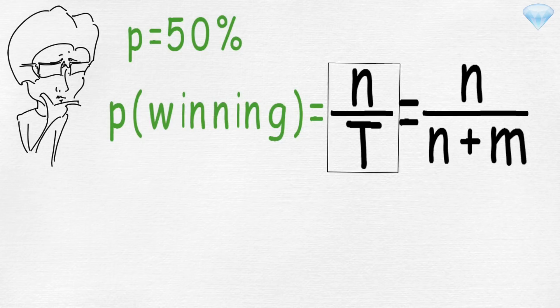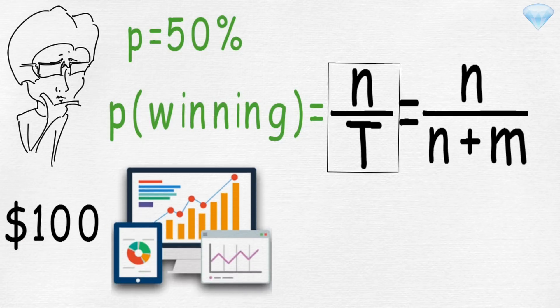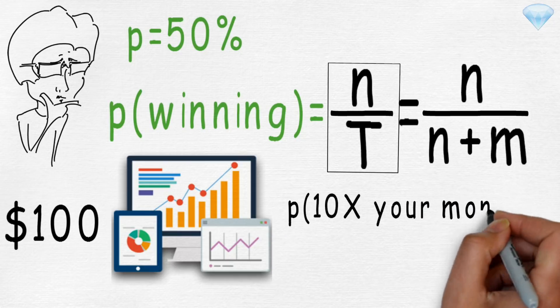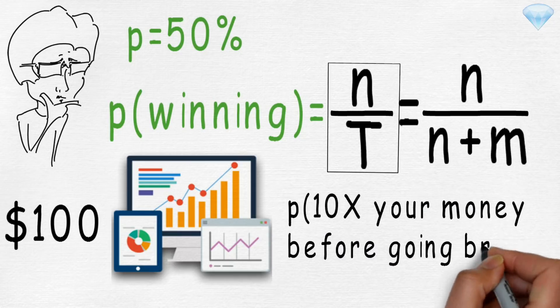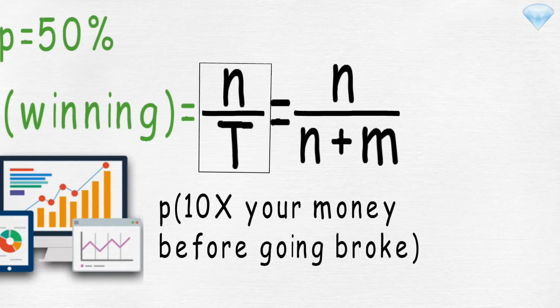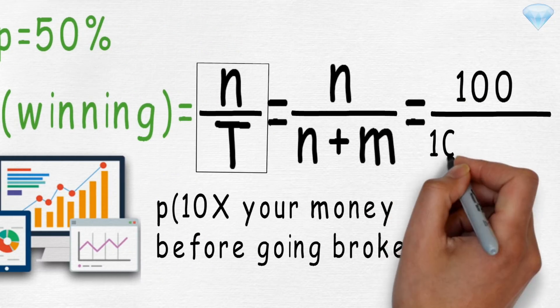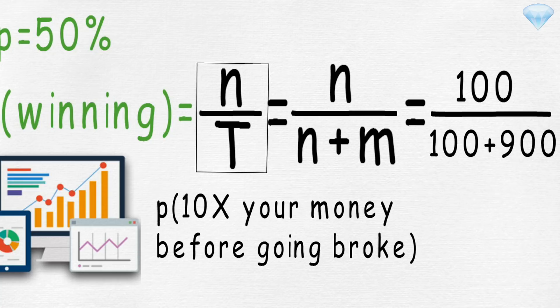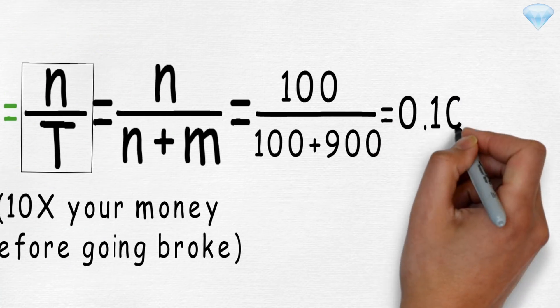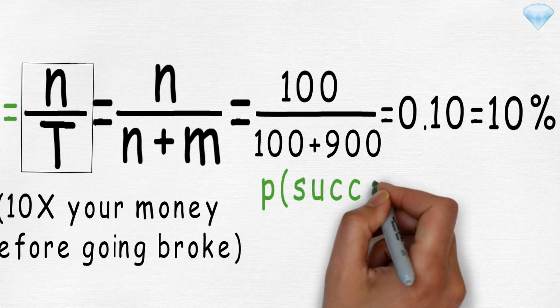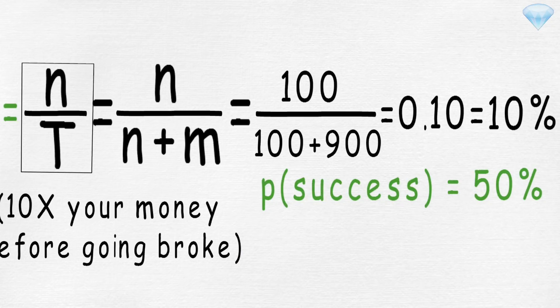So suppose we start with 100 dollars day trading. Now, the question is, what is the probability of making 10x your money before going broke? Probability of success equals 100 divided by 100 plus 900, which equals 0.10 or 10%. So if probability of success is 50%, just by flipping a coin, you still have very small chance of making 10x day trading.